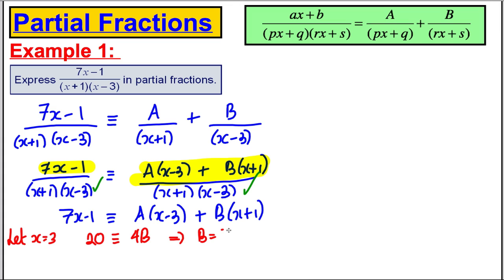What else could we let x be? We could let x equal negative 1. Negative 7 minus 1 would be negative 8, would therefore be identical to negative 1 subtract another 3 be negative 4A, and this would disappear, and this tells us that A must be 2. So we found our A and our B.